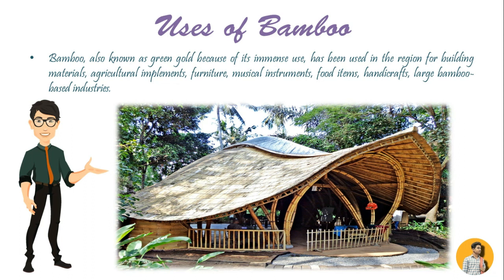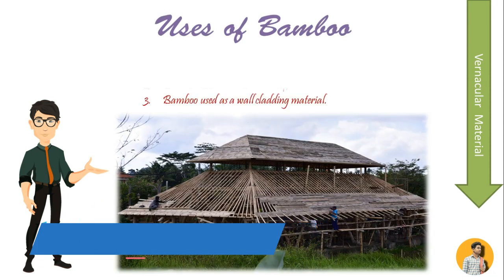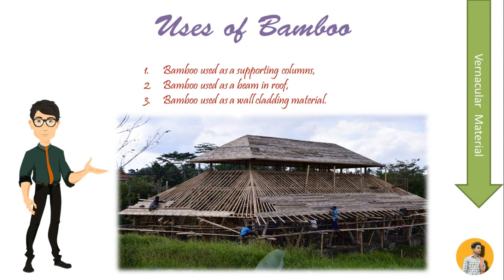There is a long vernacular tradition of the use of bamboo in structures in many parts of the world, especially in more tropical climates where it grows into larger diameter canes. For example, bamboo is used as supporting columns, bamboo used as a beam in a roof, and bamboo used as a wall cladding material.